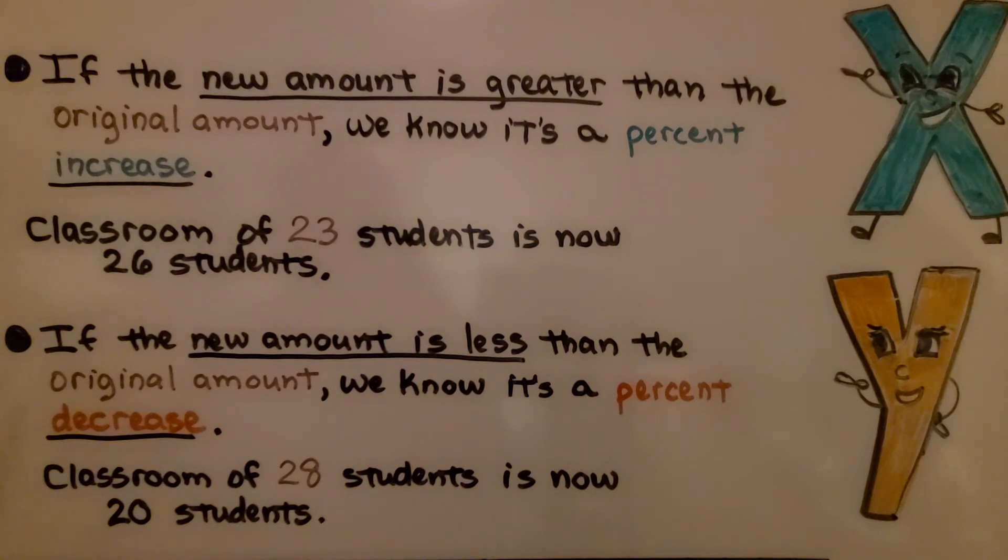If the new amount is less than the original amount, we know it's a percent decrease. If there was a classroom of 28 students is now 20 students, that number went down. That's a decrease.